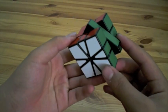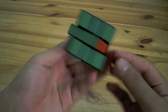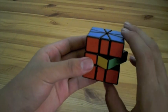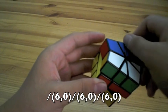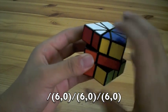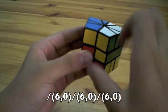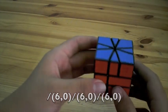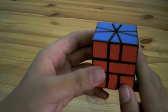Now in the end of a solve, we might come with something like this. And this just requires a short algorithm to fix it. And the algorithm is... And with those, you should be able to solve the Square-1 every time.